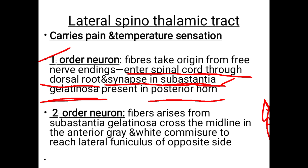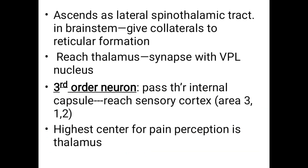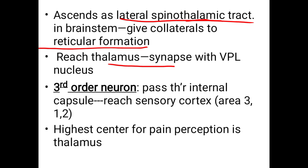The second order neuron arises from the substantia gelatinosa, crosses the midline, reaches the lateral funiculus of the opposite side, and ascends as the lateral spinothalamic tract. 'Spino' means from the spinal cord and 'thalamic' means it is going to the thalamus. In the brainstem it sends collaterals to the reticular formation, then reaches the thalamus and synapses in the VPL nucleus. From the VPL nucleus, the third order neuron arises and reaches the sensory cortex.